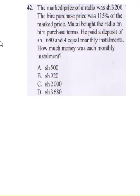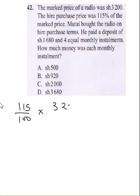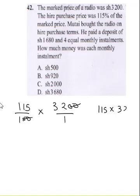The first thing you need to establish is that he bought this via hire purchase, so the hire purchase price is 115 percent. To get that: 115 over 100 multiplied by 3,200. The zeros cancel, so 115 multiplied by 32 gives us 3,680. This is the hire purchase price.